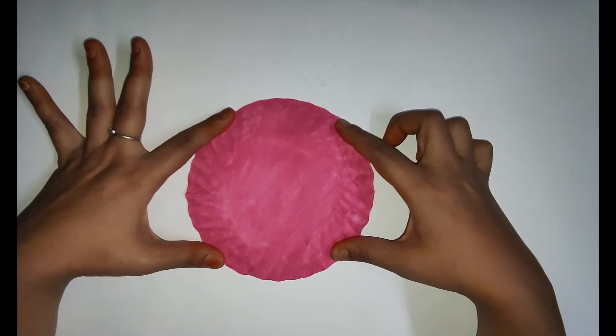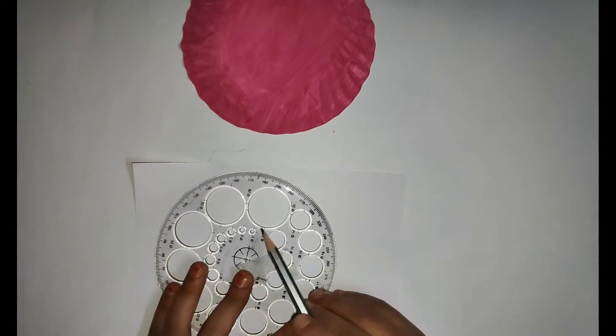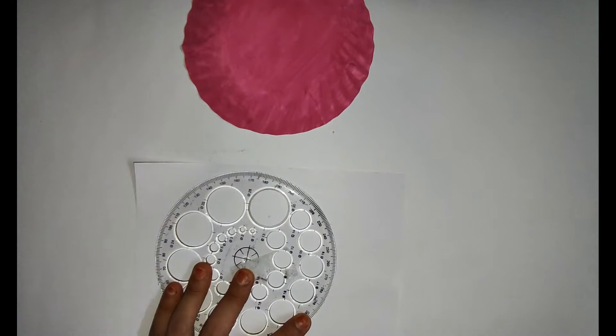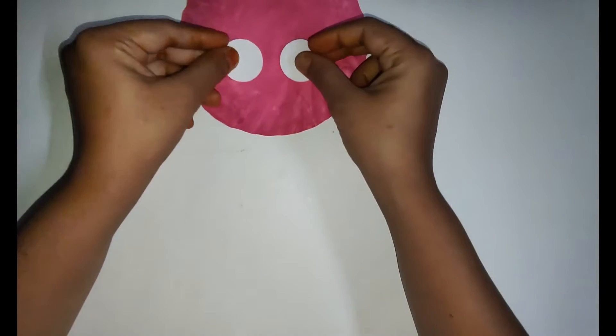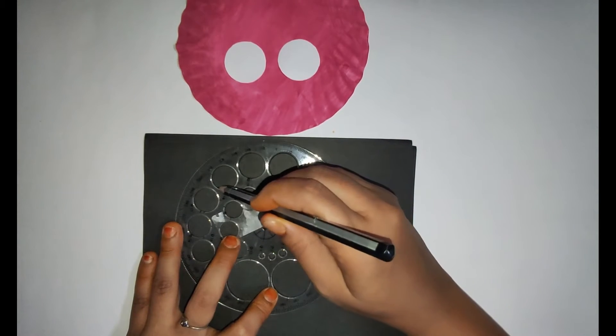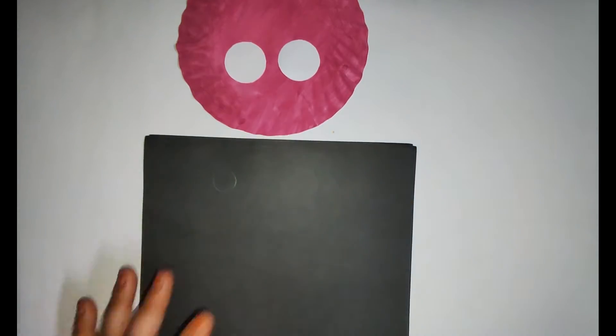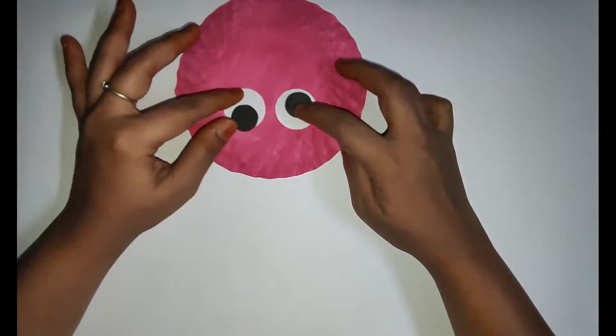After that I am taking white color paper and drawing a circle and cut it. This will be our pig's eye. So here I am using black color paper to draw the pupil of the eyes. See, we have to place it like that.